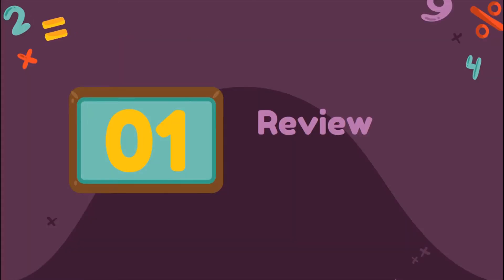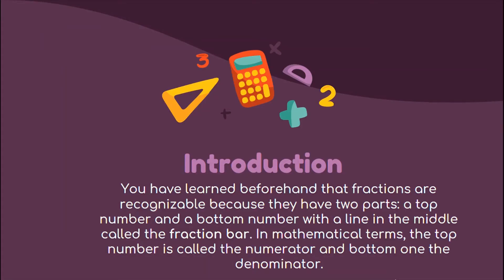Now let's start our review. You have learned beforehand that fractions are recognizable because they have two parts: a top number and a bottom number with a line in the middle called fraction bar. In mathematical terms, the top number is called numerator and the bottom number is what we call denominator.